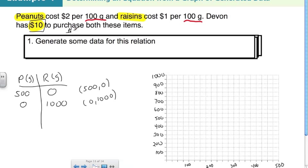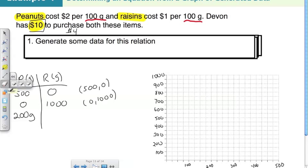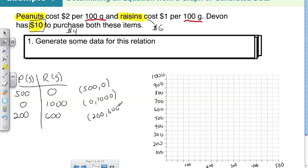Let's create one more point using a combination. Say I spend $4 on peanuts — that gives 200 grams, since $2 goes into $4 twice. That leaves $6 for raisins, giving 600 grams. So that point is (200, 600).